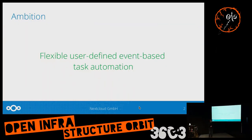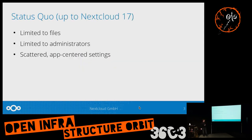If you know tools like 'if this and that', where you have components that trigger some event, something happens, you have some criteria, and then something else should happen — this is what we try to do here. Previous to Next Cloud 18, which will be released in January, we already had something in place, but it was far more limited.